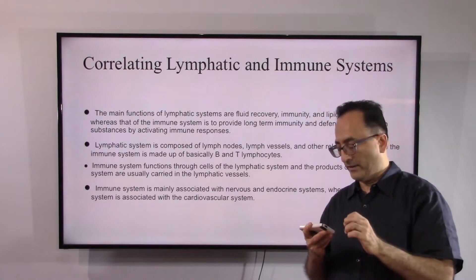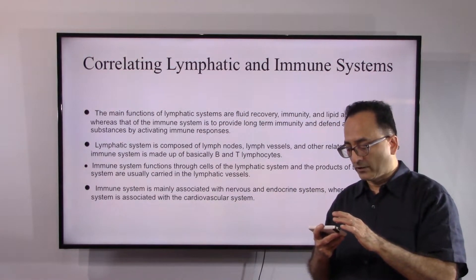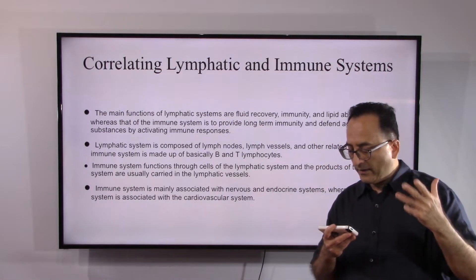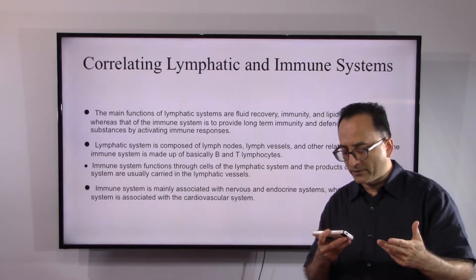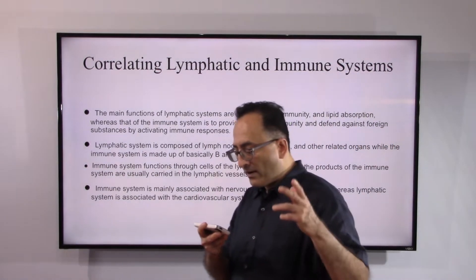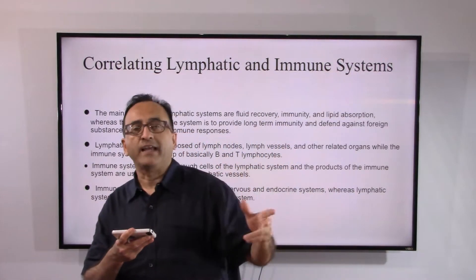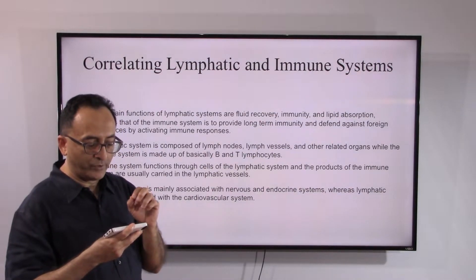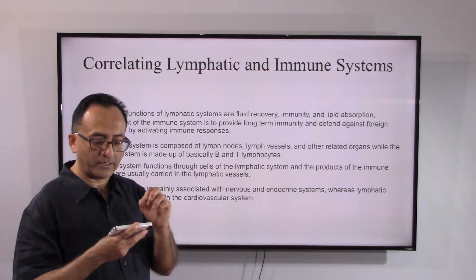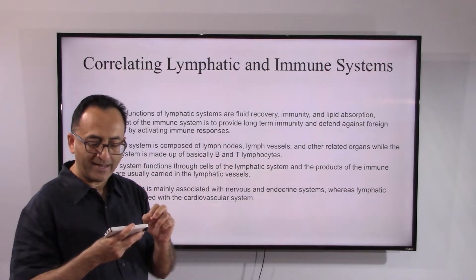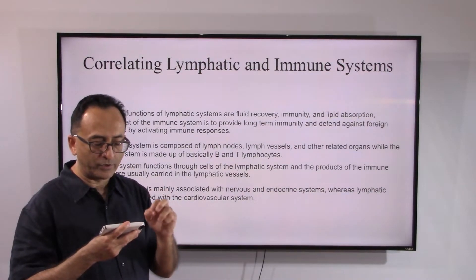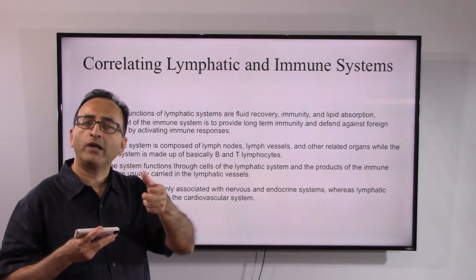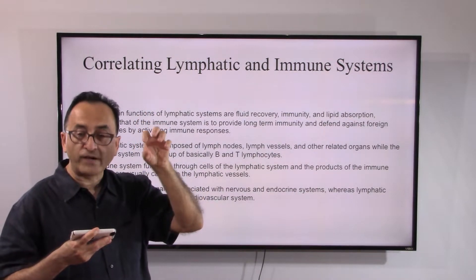The immune system is essentially one-third of the lymphatic system's scope. The lymphatic system includes lymph nodes, lymph vessels, and related organs, while the immune system is primarily made up of B and T lymphocytes. Precisely, the immune system functions through the cells of the lymphatic system, and the products of the immune system are usually carried in the lymphatic vessels — that is the correlation.